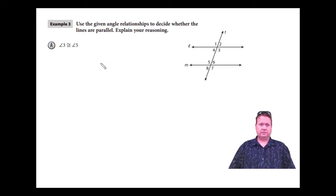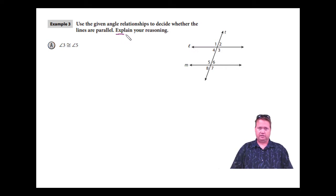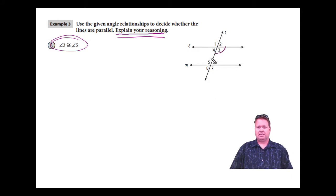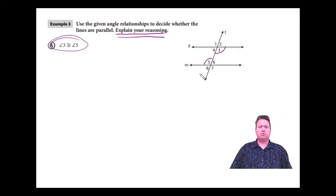Now I'll answer the last few questions. The key is to explain our reasoning. We want to decide if line L is parallel to line M given certain information. If angle three is congruent to angle five, that means alternate interior angles are congruent. Since angle three is equal to angle five and they are alternate interior angles, then line L must be parallel to line M.